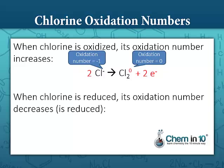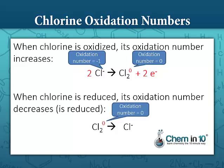In contrast, when chlorine is reduced, its oxidation number is also reduced — it decreases. So in this case, when we go from chlorine gas to chloride ion, we're going from an oxidation number of zero to an oxidation number of negative one, so its oxidation number is reduced. To balance this reaction, we have two chlorine atoms on the left, two chloride ions on the right, and we're going to balance out that negative charge by adding two electrons to the left.